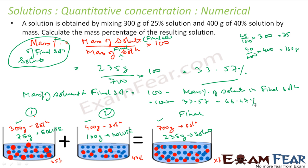So the key point is: when you mix solutions, you add solute to solute and solution to solution. There was a 300 gram solution with 75 gram solute, and a 400 gram solution with 160 gram solute. When mixed, solute becomes 235 gram and total solution is 700 gram. Mass percentage of solute comes out to 33.57 percent. To find mass percent of solvent, subtract from 100.